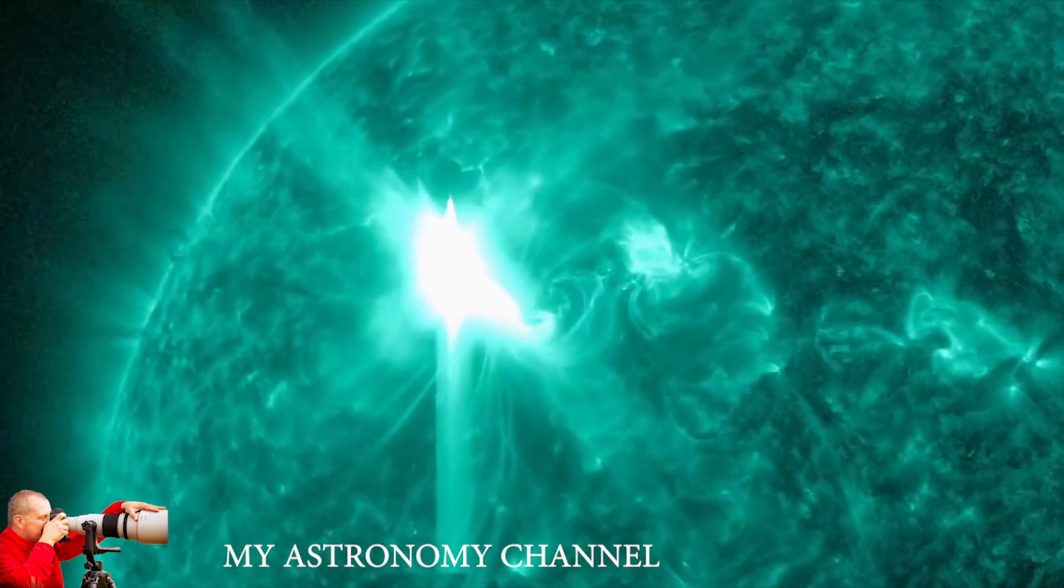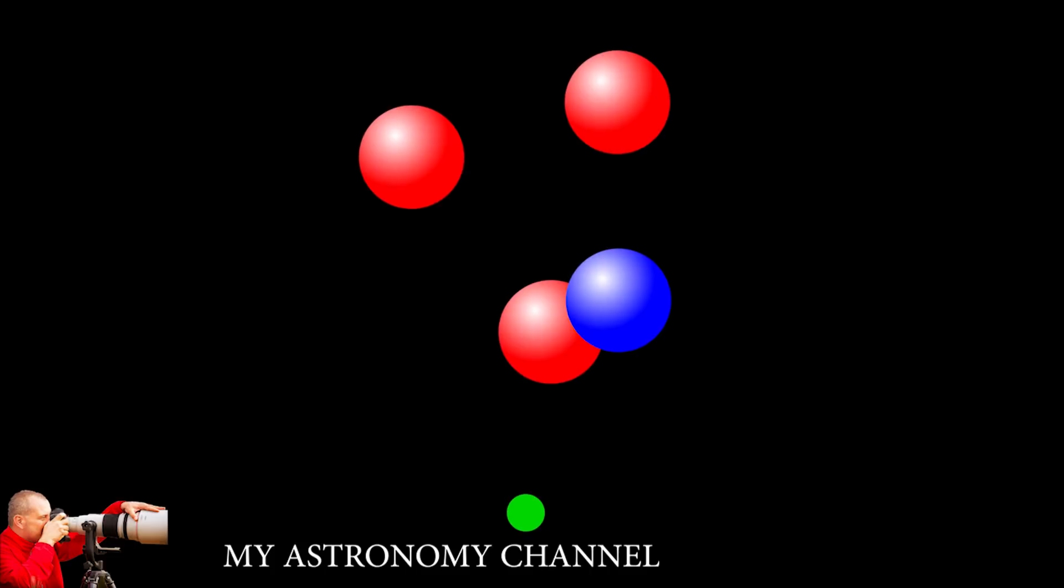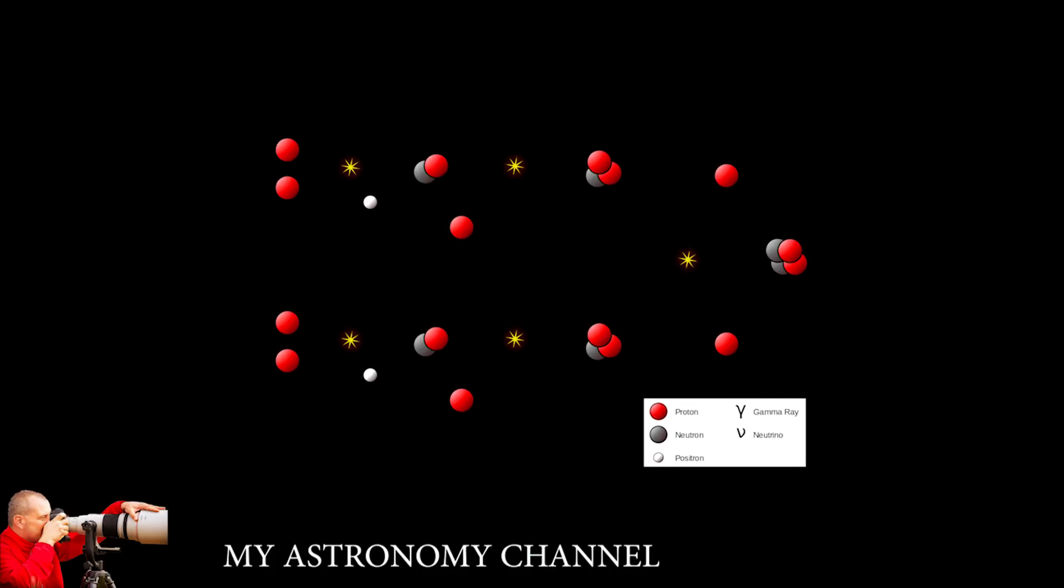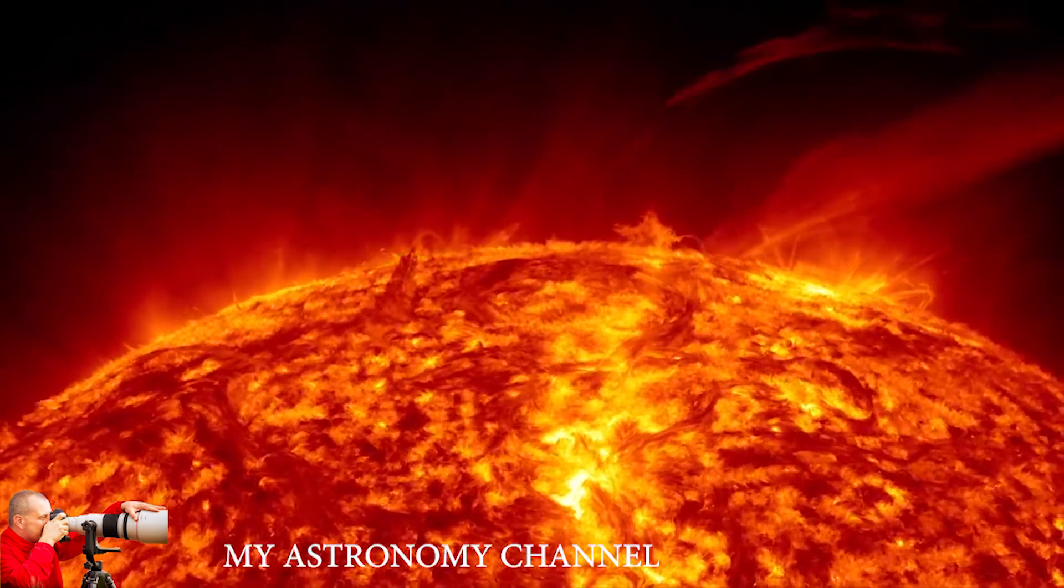The sun starts with protons and through a series of steps, turns them into helium. Since the total energy of helium is less than the energy of the protons that went into it, this fusion releases energy, providing us all life on our planet.